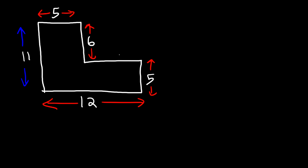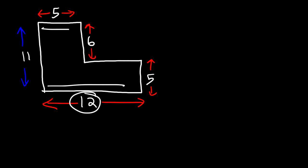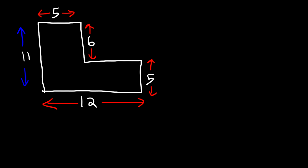Now let's find the length of the other missing side. Notice that we have 12 for the entire side, and then this section is 5. So 5 plus some number must add up to 12. To find that number, it's just 12 minus 5. So therefore, this section has to be 7. Now that we know it's 7, we can find the perimeter.